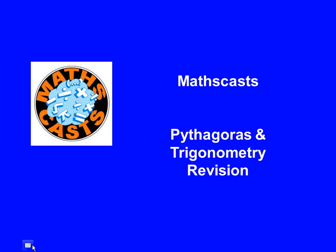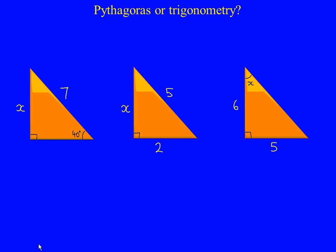So let's begin. We have three questions on the board, three right-angled triangles, and our job now is to decide whether we're going to use Pythagoras or Trigonometry to answer them.